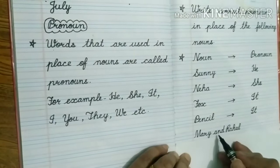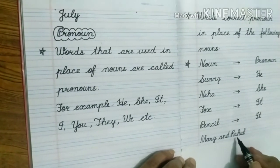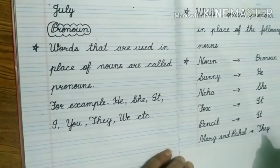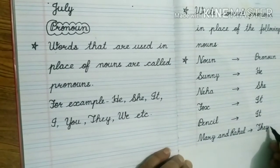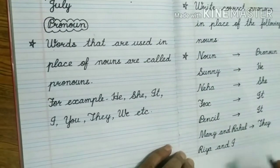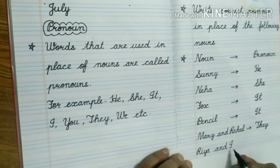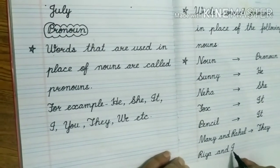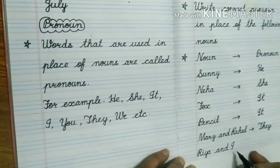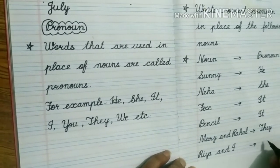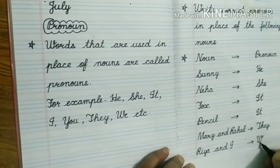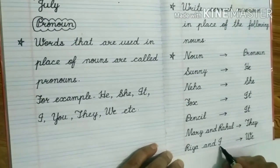Mary and Rahul — here are two names, so we will use the pronoun they, as they is used for plural nouns. After that, here is Rhea and I. Children, you see that I am also present here, so we will use the pronoun we. We will use we because I am also here.